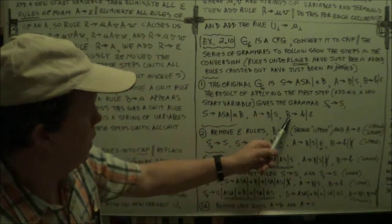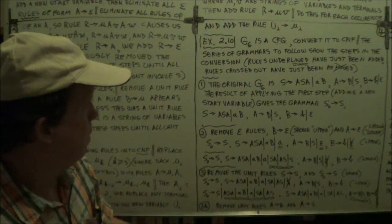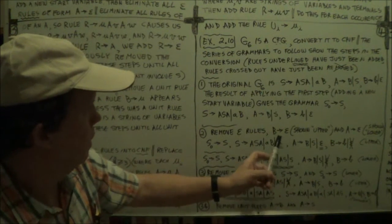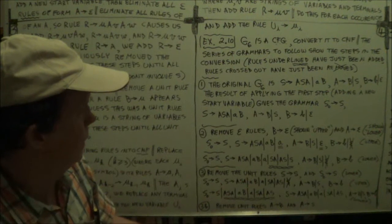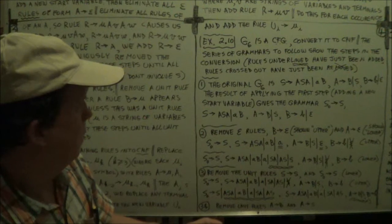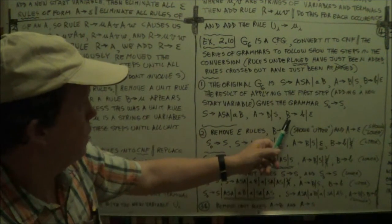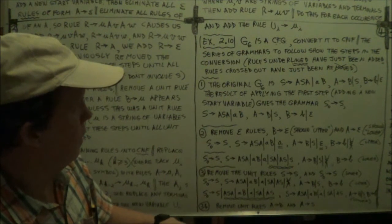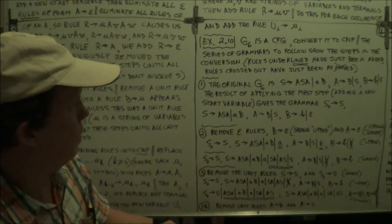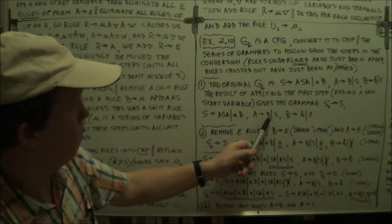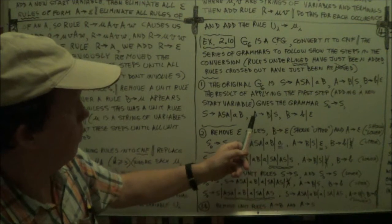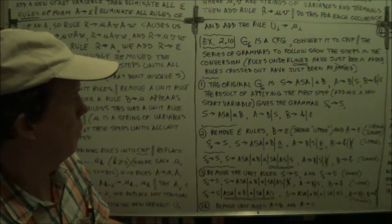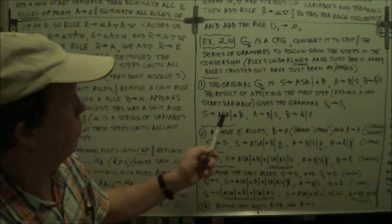So, B arrow epsilon. So we eliminate B arrow epsilon. We eliminate that. So here, here. And then we go, and then we go looking for all the instances of B on the right hand side. And we put an epsilon where the B's were. Okay? Well, here's a B on the right hand side. So, if we eliminate it, we just get the empty string. So, then we get A arrow epsilon. But that's also the form, that's also an epsilon rule. Okay? So, we want to get rid of that as well.